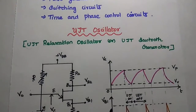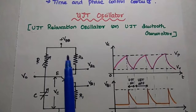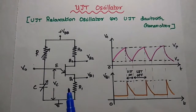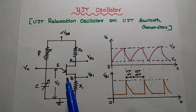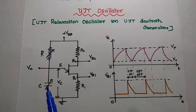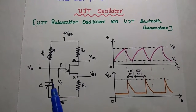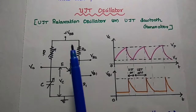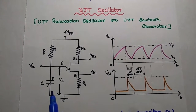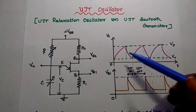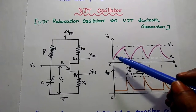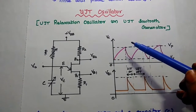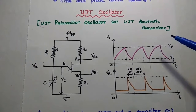Now we are going to discuss UJT oscillator. It can also be represented as a UJT relaxation oscillator or UJT sawtooth generator. This is the circuit diagram of the UJT oscillator. It consists of the UJT and a capacitor — these two are very important components to generate the sawtooth signal. Whenever the supply voltage VBB is given to this circuit, the capacitor starts charging towards the supply voltage.